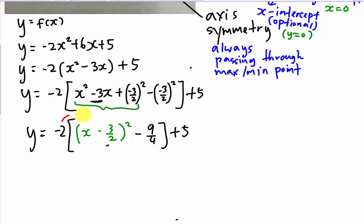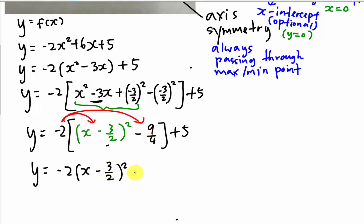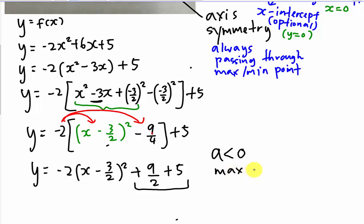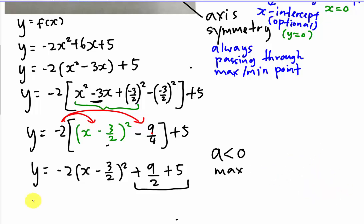Now I expand by multiplying negative 2 into the bracket — but leave the (x minus 3/2) squared term unchanged. Negative 2 multiplied by negative 9 over 4 gives plus 9 over 2, and then plus 5. Since the coefficient is negative 2 — meaning a is negative — this is a maximum value. The final result is y equals negative 2 times (x minus 3 over 2) squared plus 19 over 2. So p equals 3 over 2 and q equals 19 over 2.